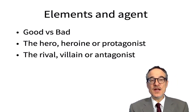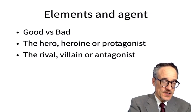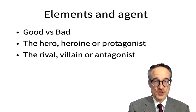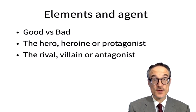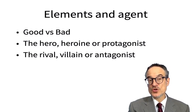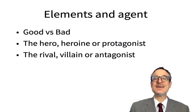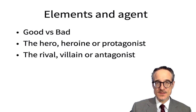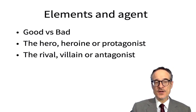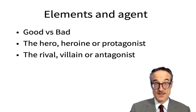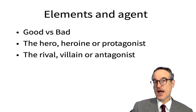Important elements and agents in a story: often stories are framed in terms of good and bad — good versus bad — and usually good is the winner and bad is the loser. There's also, importantly, a hero or heroine, also called a protagonist. The protagonist is the main character in the story. And there's also often a rival, or a villain, or an antagonist — the antagonist is fighting against the protagonist. These are elements that stories usually have.